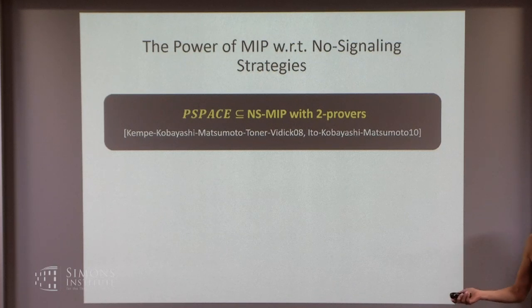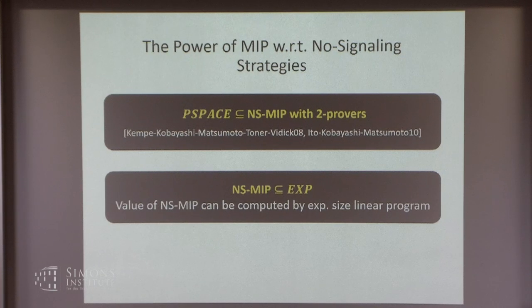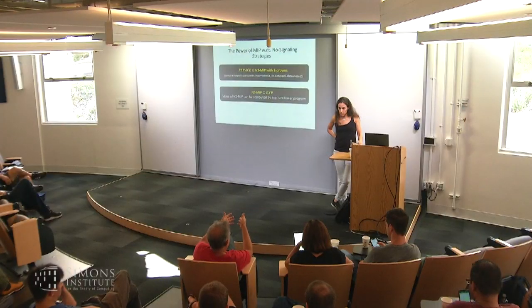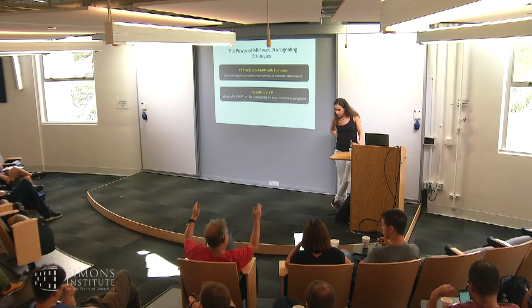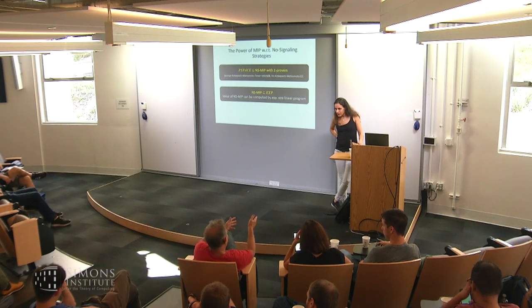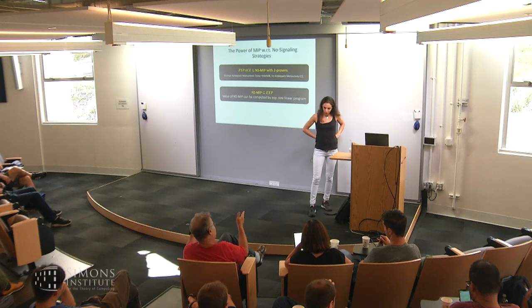The question is: can you push the EXP threshold down to three provers? One reason we were interested is that if you could push it further, you'd get better hardness of approximation results. People in the quantum community have also been asking this question to understand the power of these proof systems. What we show is that up to at least order square root log n provers, it's P-space.